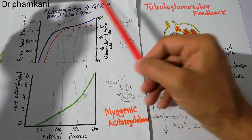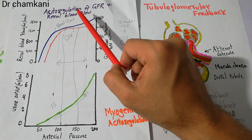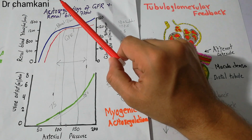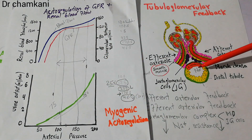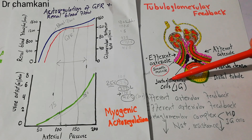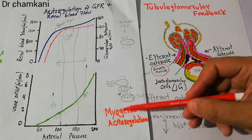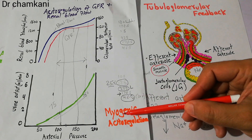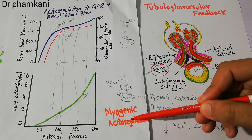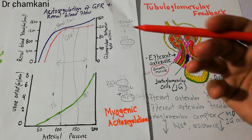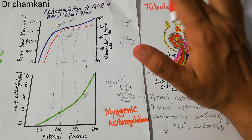They help in the autoregulation of GFR and renal blood flow. In this process, electrolytes, sodium, renin, juxtaglomerular cells, and the macula densa are not involved — the arteries themselves are involved. That is why this mechanism is known as the myogenic mechanism of autoregulation, and it is important in the regulation of GFR and renal blood flow.